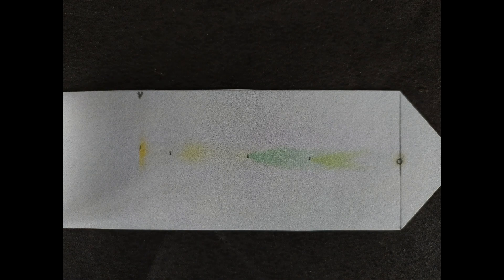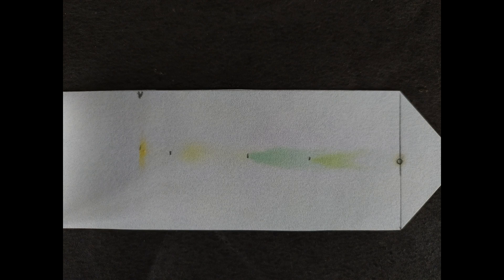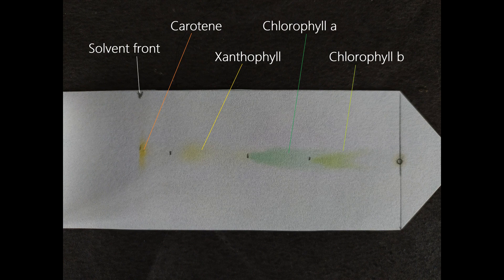The green leaves used in this experiment were found to have four different pigments, namely chlorophyll B, chlorophyll A, xanthophyll and carotene. Additionally, you might obtain a fifth pigment, namely anthocyanin, if you have used leaves with reddish coloration.